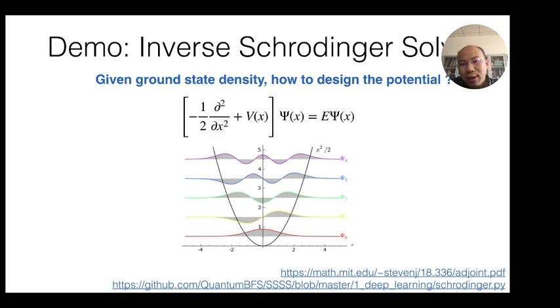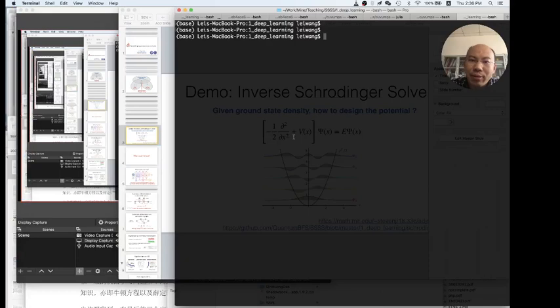So what is differentiable programming? Let me show you with this simple concrete example. Consider such a problem: given the ground state density, how do we design the potential? We learned how to solve this forward problem in quantum mechanics 101, right? It's one dimensional, we just diagonalize the Hamiltonian. But how to solve this inverse problem, which I call the inverse Schrödinger equation problem? There is actually a differentiable programming way. You can find the code through the link here.